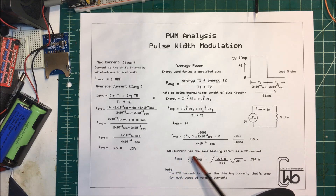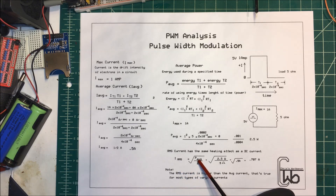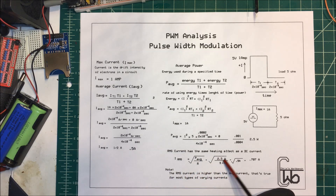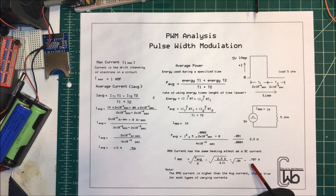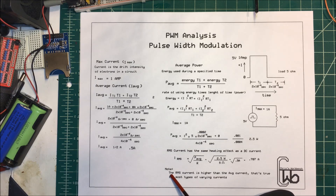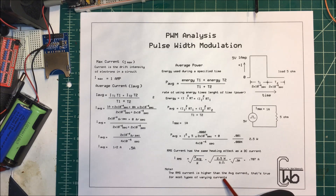What's our RMS current? The I-RMS equals the square root of average power divided by resistance. So we have 2.5 watts divided by 5 ohms, which is 0.5, and we take the square root of that — giving us 0.707 amps. Note that the RMS current is higher than the average current, and that's true for most types of varying currents.